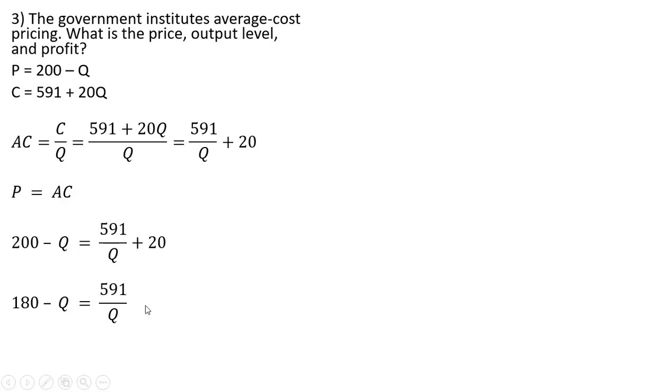I'm going to multiply both sides through by Q. Multiplying both sides through by Q, we get 180Q minus Q squared, and then the Q's cancel on the right-hand side. Simplifying, we have Q squared minus 180Q plus 591 equals zero.